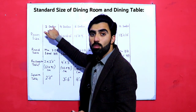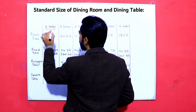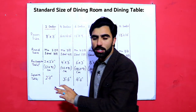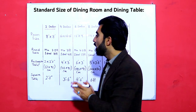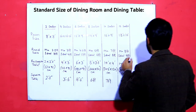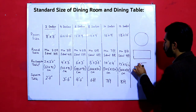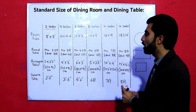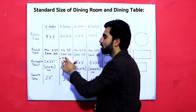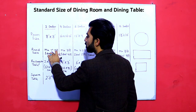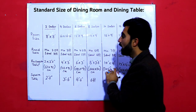For two sitters, the size of the dining room should be eight by eight feet — it should not be less than eight by eight feet. For the round table for two sitters with a dining room of eight by eight feet, the minimum size of the round table should be two point five feet, and the ideal size is three feet.